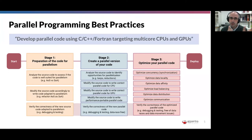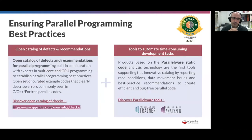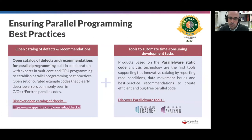Remember these three stages: prepare the code, create your first parallel version even if it initially slows down, and then in stage three, optimize your code to reach your performance goals. We propose the approach based on ensuring parallel programming best practices, which recently received the Innovation Radar prize in the European Union as an innovative approach with impact across many disciplines and markets.